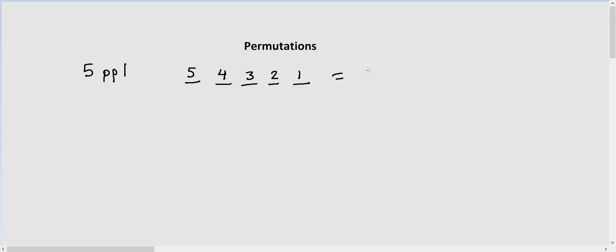So if we look at the number of possibilities, that will be equal to the multiplication of all these possibilities. That can be called five factorial, or that will be equal to 120.